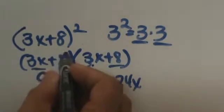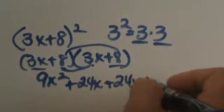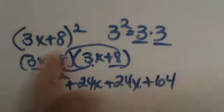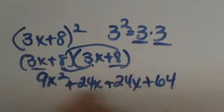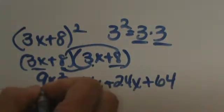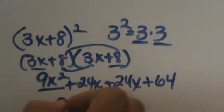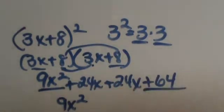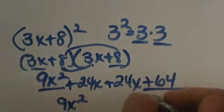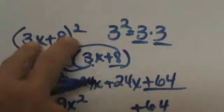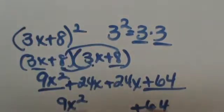Then when we do the last we are going to take 8 times 8 which is 64, and since these signs are all positive it makes it fairly easy, everything is just positive. Now if you will notice the 9x squared, the first term is a perfect square, and if you will notice the 64, the last term is a perfect square. That is really just the first and the last term squared.